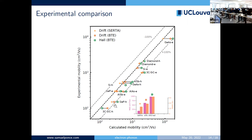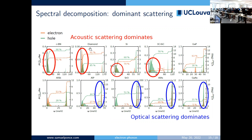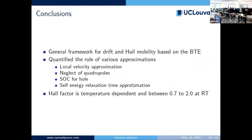We can also look at the dominant scattering mechanisms by plotting the spectral decomposition — the contribution as a function of frequency — and integrating gives the scattering rate. Some materials such as silicon, diamond, and boron nitride are very stiff and dominated by acoustic scattering, as expected. Other materials like gallium arsenide and indium arsenide are dominated by optical phonon scattering, sometimes very strongly so.